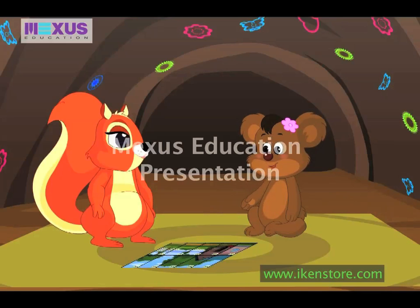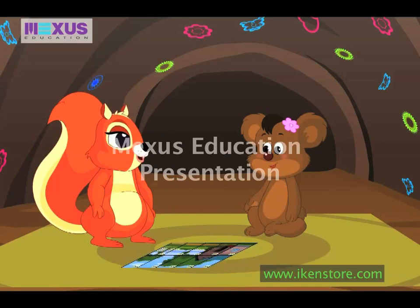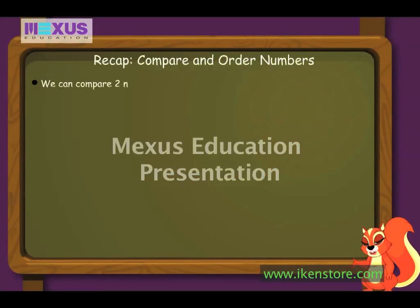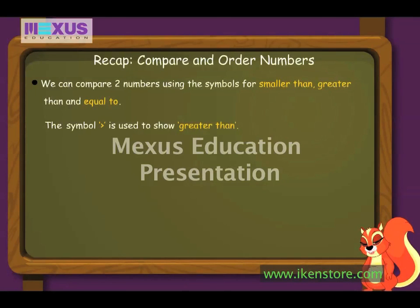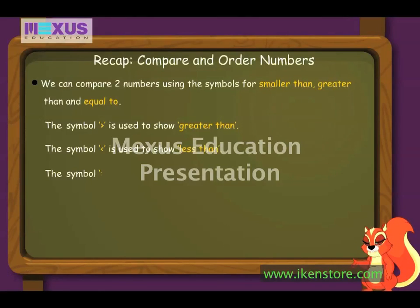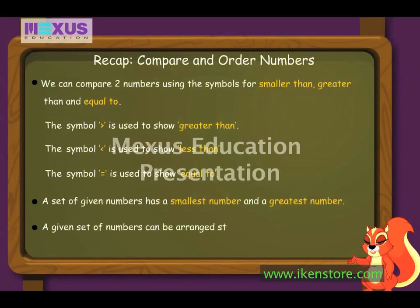Wow! This is a lovely picture. Isn't it, Amber? You are right, Betty. Hey, let's take another 10 pieces and arrange them to form a beautiful picture. Oh, sure! We can compare two numbers using the symbols less than, greater than and equal to. This symbol is used to show greater than. This symbol is used to show less than. This symbol is used to show is equal to. A set of given numbers has a smallest number and a greatest number. A given set of numbers can be arranged starting from the greatest number up to the smallest number by counting backward.